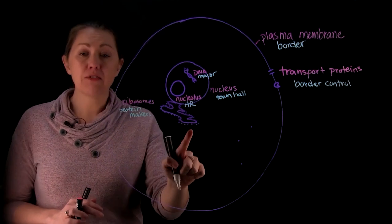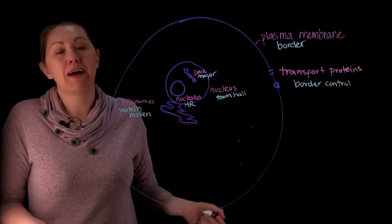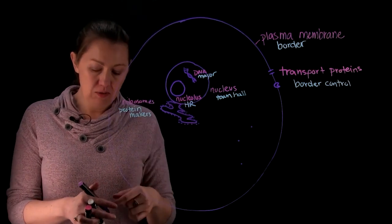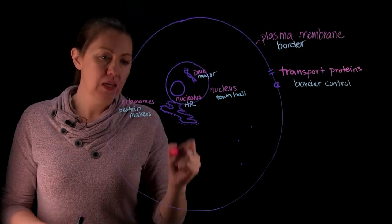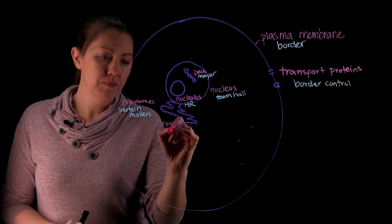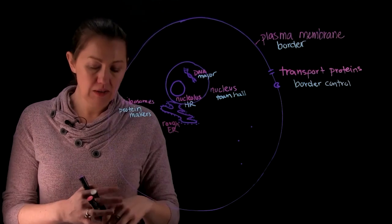You have a factory here filled with these protein makers. So what do you think the factory makes? Well, it makes protein. And so this factory, because it has a bunch of bumps on it, is going to be called our rough ER, rough endoplasmic reticulum. And so that rough ER is our protein factory.